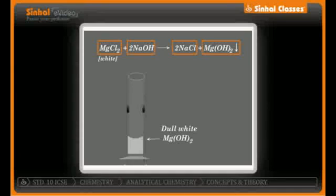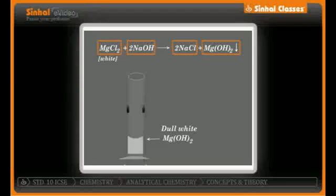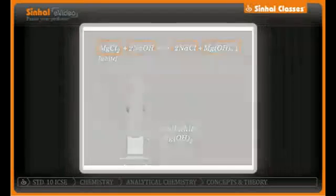Now consider chlorine: on the reactant side chlorine is 2, whereas on the product side in NaCl there is only one chlorine. To balance chlorine we put 2 in front of NaCl. That makes sodium 2 on the product side, so we put 2 in front of NaOH as well. The entire equation is now balanced, with the number of atoms on the reactant side equal to those on the product side.